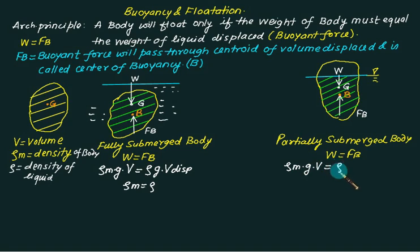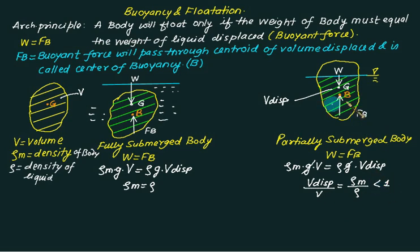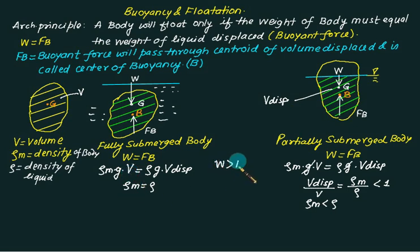For a partially submerged body, the weight equation gives: ρm × g × V = ρ × g × V_displaced. Since the hatched displaced volume is less than the total volume V, we conclude that V_displaced / V is always less than one, and equals ρm / ρ. This means the density of the material must be less than the density of the liquid — it should be lighter. For example, wood and plastic float because their density is less than that of the liquid. If weight exceeds buoyant force, the body will sink.